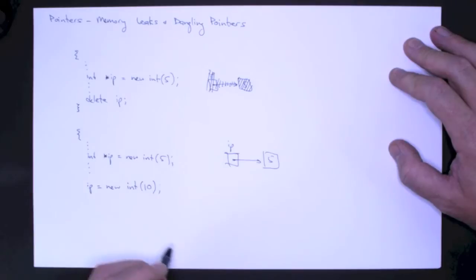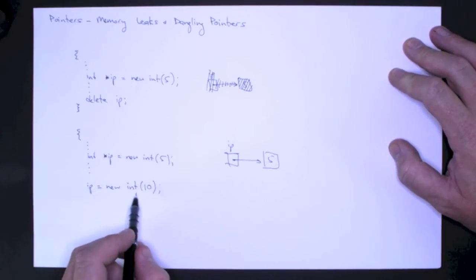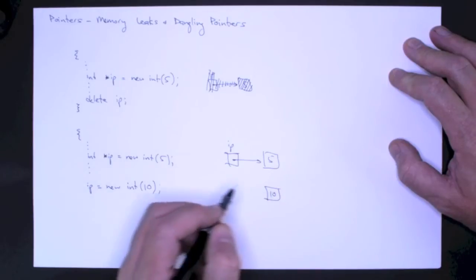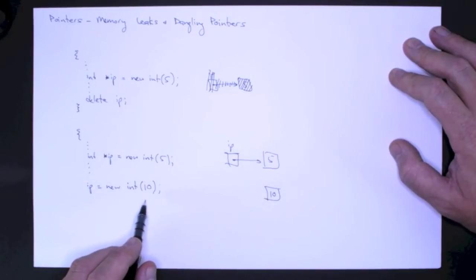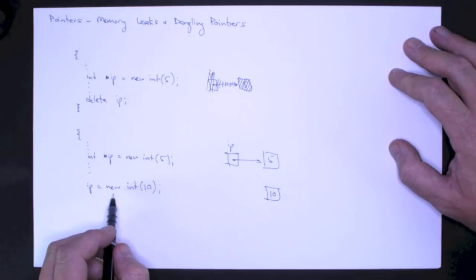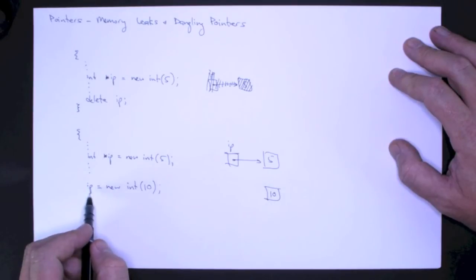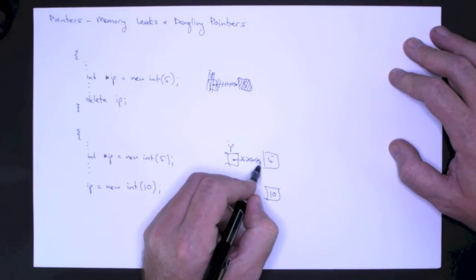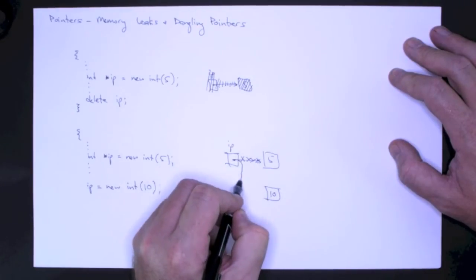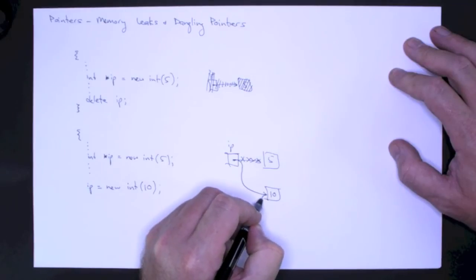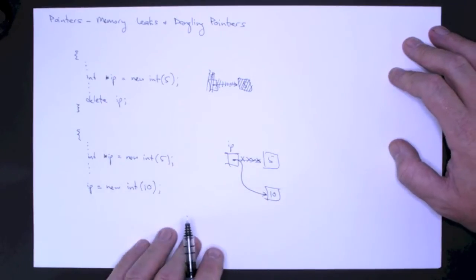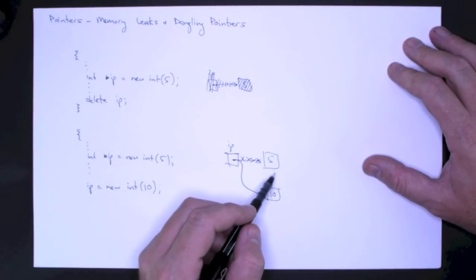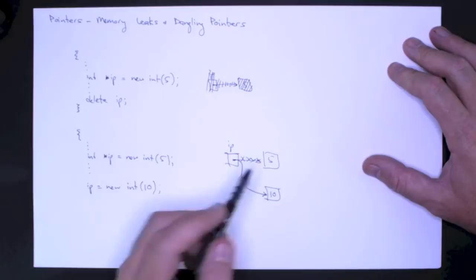Now what's going to happen in this case, we're going to allocate space for a new integer and store 10 in that location. And then the new operator is going to return the address and set it equal to IP. What's going to happen in this case? Again, 5 will be left in memory, and the new address stored in IP will point to 10. We've lost our ability to refer to this memory address, so we can't delete it.